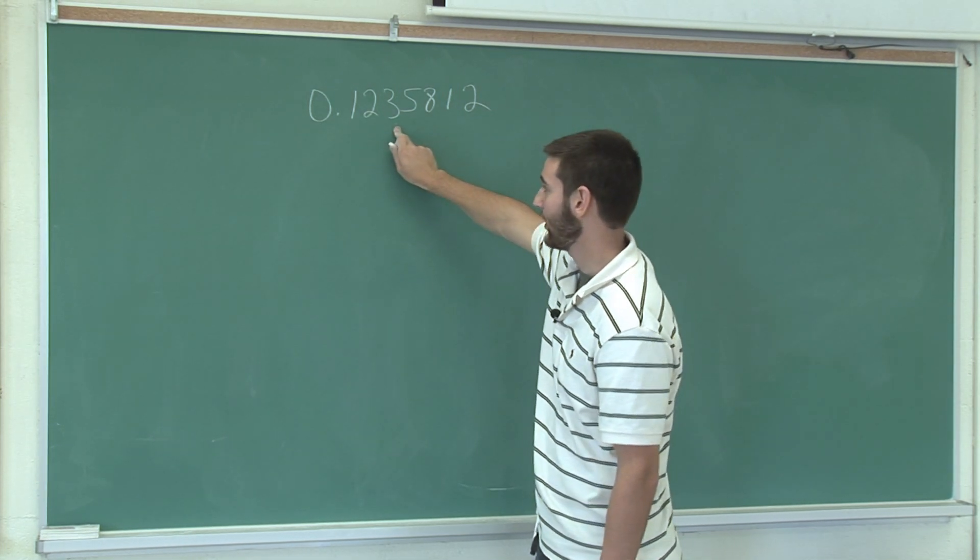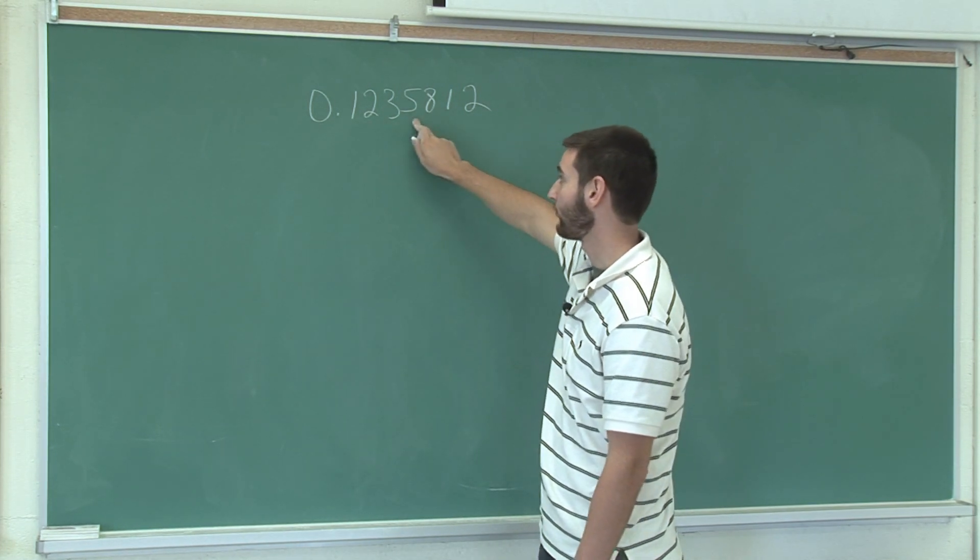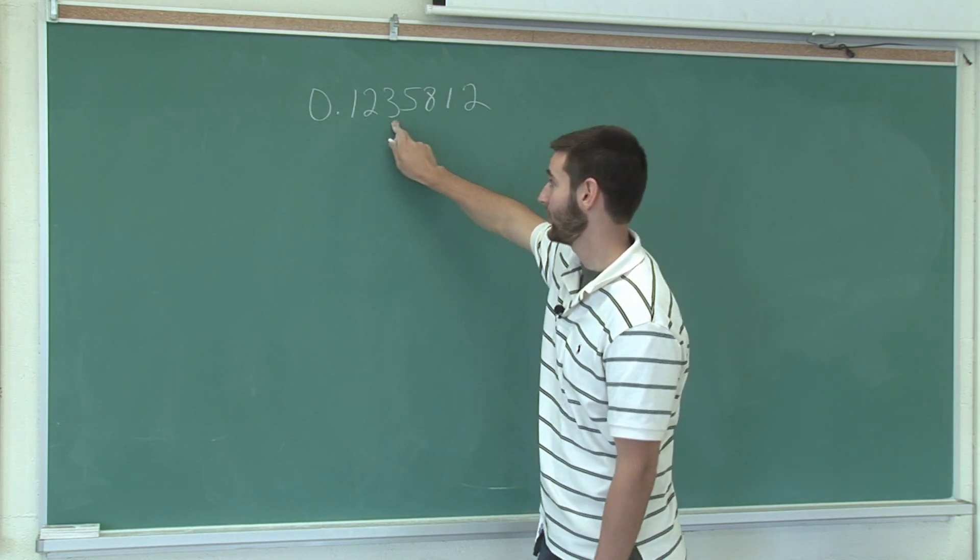So, if I want to round to three places, I look at the fourth place. If it's five or higher, I round up.